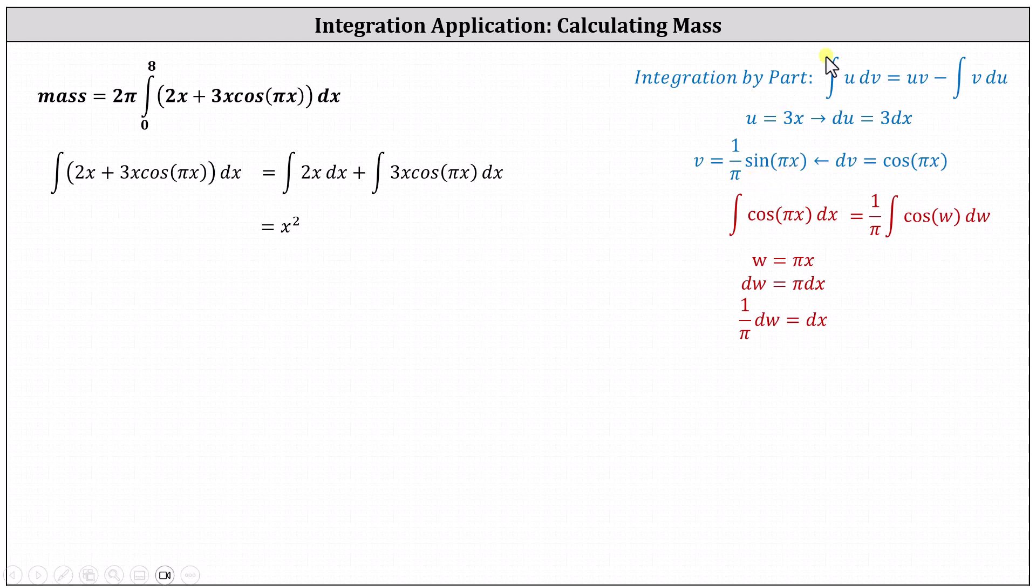Applying the integration by parts formula, we have u·v, which is (3x/π)sin(πx), and then minus the integral of v du gives us minus the integral of (3/π)sin(πx). Notice I factored out the 3/π.